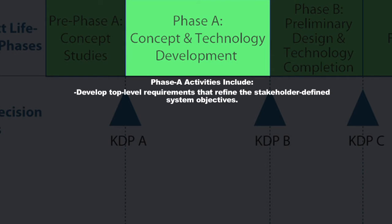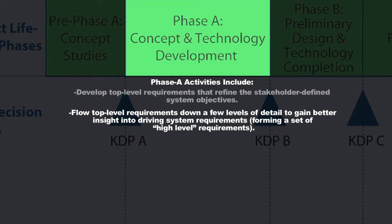You're going to flow these top-level requirements down a few more levels of detail in Phase A — we call those a high-level set of requirements — maybe two more levels of detail, providing more specificity along the way. You're going to figure out what your driving system requirements are: the requirements that will really cause your designers to stretch to meet them, perhaps requiring a new technology or a new design technique for a satellite. You want to understand which requirements will be key for meeting objectives and pushing the design forward.